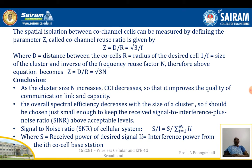Spatial isolation is maintained between co-channel symbols, which is measured by defining a parameter Z called the co-channel reuse ratio. The co-channel reuse ratio is given by D/R, where D is the distance between co-cells and R is the radius of the desired cell.